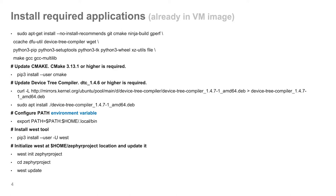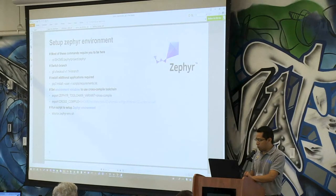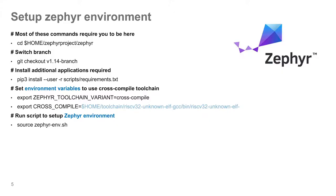Instead of all what we did there, all of this is already on your virtual machine. In case you are going to import Zephyr on your Linux host from scratch, you have to follow these steps and configure that environment variable. Once you have it, you just have to check out the branch, install the requirements with the script — it's very easy — and set up the environment variables with all these commands.